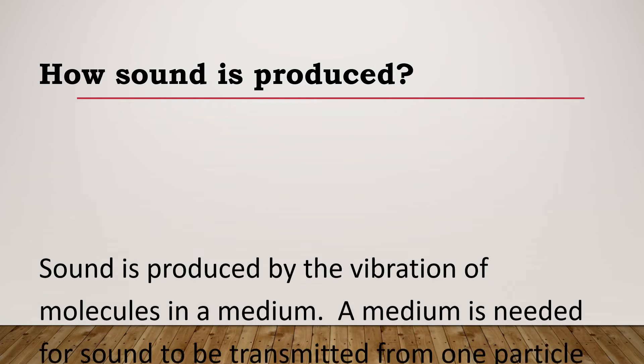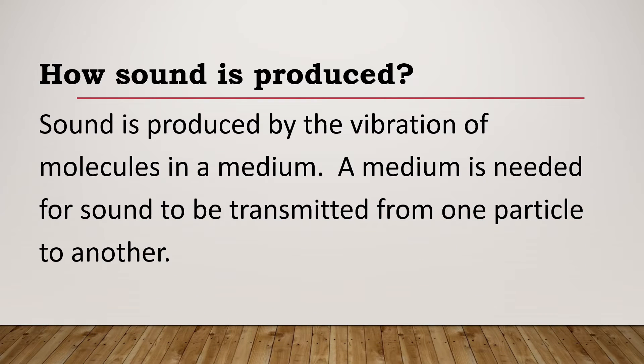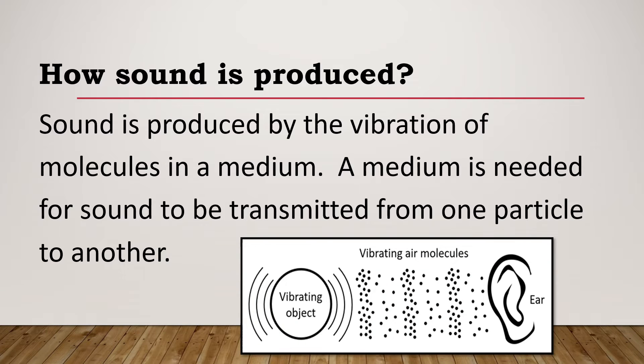Now, how sound is produced? Sound is produced by vibration of molecules in a medium. A medium is needed for sound to be transmitted from one particle to another. How does it happen? Ang sound kasi, it's a mechanical movement. So it will start from an object. Let's say for this picture, a vibrating object. So it'll be a mechanical movement. As it moves, yung molecules na dinadaanan niya, which are the medium, magbabibrate sila from one molecule to another. And as it vibrates, mata-transfer yung sound from that object to the person who would be hearing that sound.